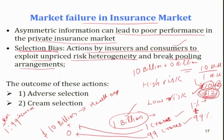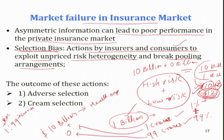The pooling means risk pooling — bringing together high risk and low risk people and calculating a premium based on that mix to sell the insurance product in the market. However, because of information asymmetry this leads to the adverse selection problem, which we will discuss shortly. And if insurers try to overcome adverse selection using other information, it leads to the cream selection problem.